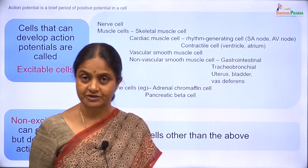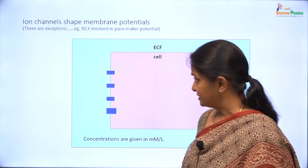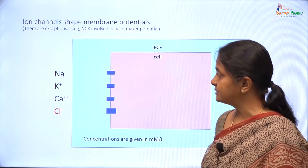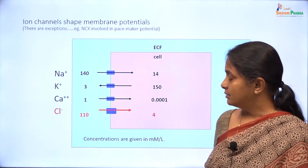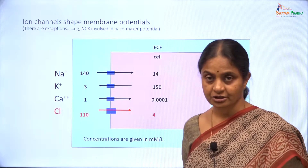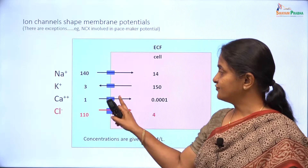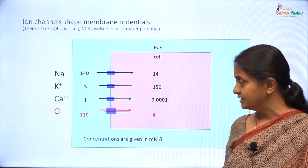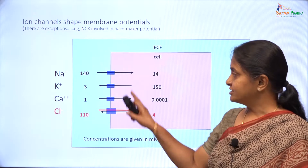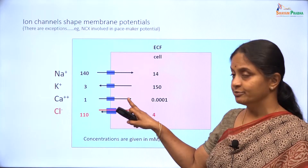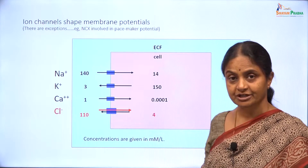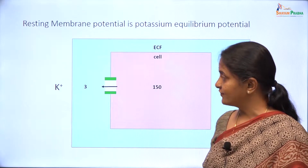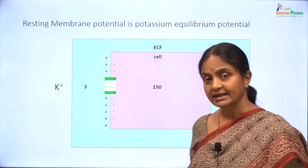Action potential is a brief period of positivity within a cell. Ion channels in general are considered to shape the membrane potential and we have seen that there are four primary ion channels. The direction of ion transport through those channels is along their concentration gradients. The direction of current for the cations is in the same direction as that of the ion transport, whereas the direction of current for the anion is in the opposite direction. From this, it is obvious that sodium and calcium equilibrium potentials will be positive and potassium and chloride equilibrium potentials will be negative. So far we have seen that the resting membrane potential is a case of potassium equilibrium potential in a neuron and many other cells.